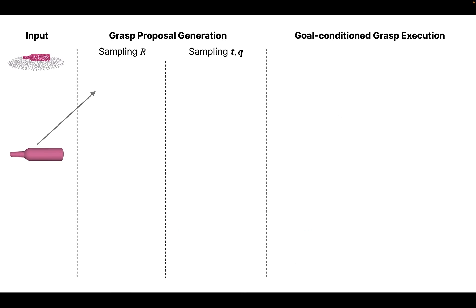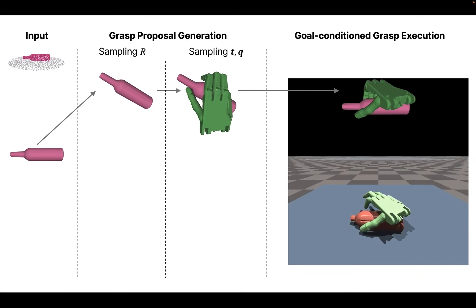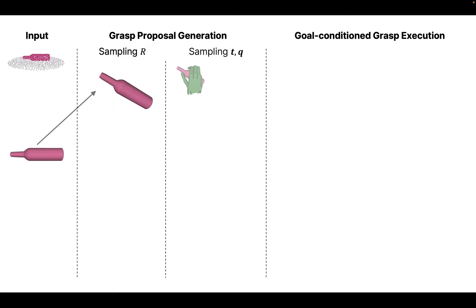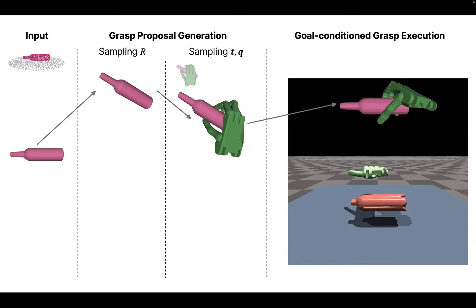Here we provide an example of how our method executes diverse grasps based on different grasp proposals. Under different sampled rotations that canonicalize the input, we can generate several proposals on the translation and joint angles. Given the grasp proposals, our policy is able to execute the specified grasp goal accordingly.